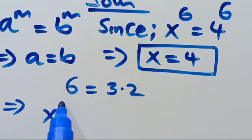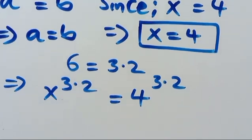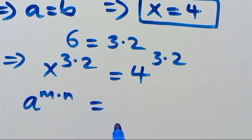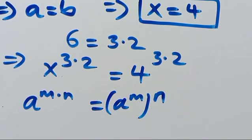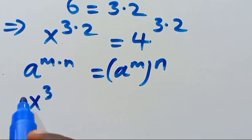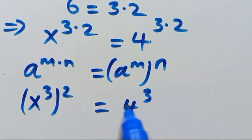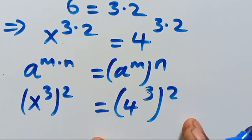So this implies we are going to have x to the power of 3 times 2 equals 4 to the power of 3 times 2 — and 3 times 2 gives us 6. Recall that when we have a to the power of m times n, this can be simplified as a to the power of m, all to the power of n. So from here we get x cubed, in parentheses, to the power of 2, equals 4 cubed, to the power of 2.